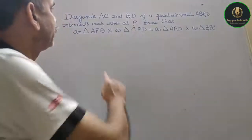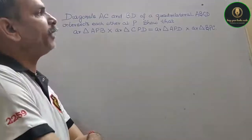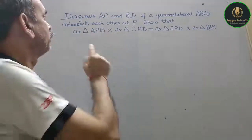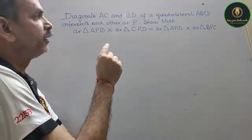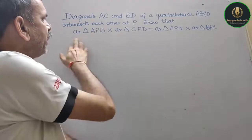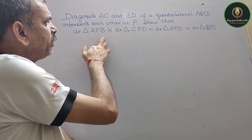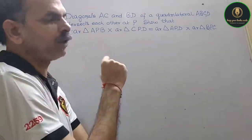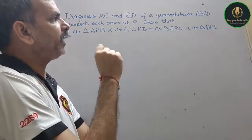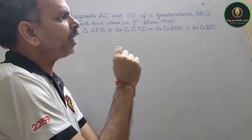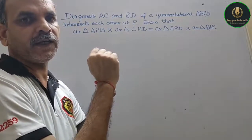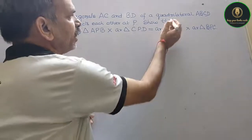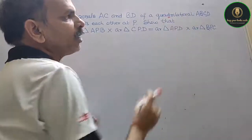The question is: Diagonals AC and BD of a quadrilateral ABCD intersect each other at P. Show that area of triangle APB into area of triangle CPD is equal to area of triangle APD into area of triangle BPC. So first, let's understand what has been asked. We have a quadrilateral ABCD.